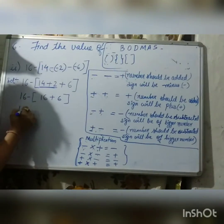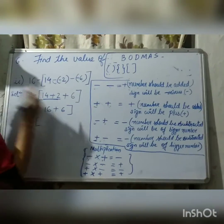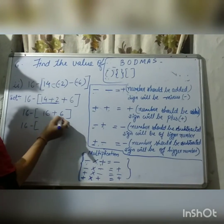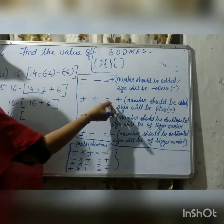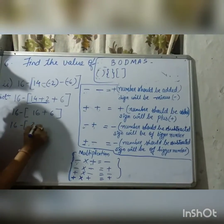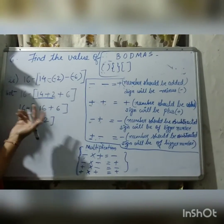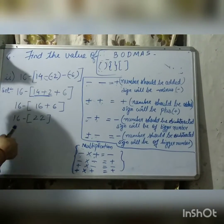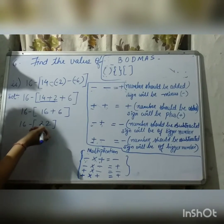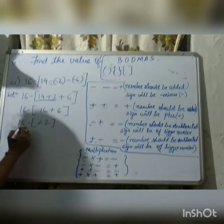Next step, we'll solve these two integers. 16 plus 6 — again, both integers are positive, so the same rule is followed. 16 plus 6 equals 22. The answer will be positive because both integers are plus, so the answer will also get the plus sign.